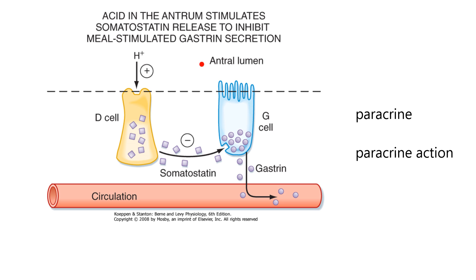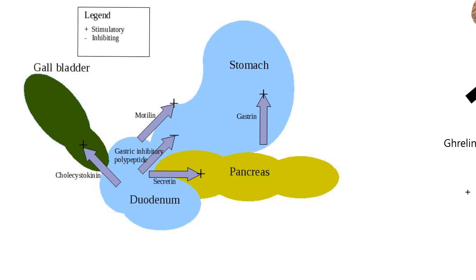But we can focus on the G cell — it senses something in the lumen and can release more or less gastrin into the circulation. That's a hormone traveling to some other tissue to bind to a receptor. Now we're going to start talking about individual GI hormones — there are going to be six of them. Five are listed here and I'll add a sixth. This diagram shows five hormones and where their targets are.